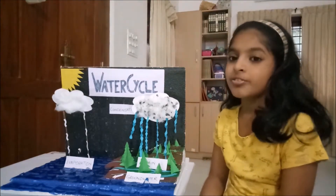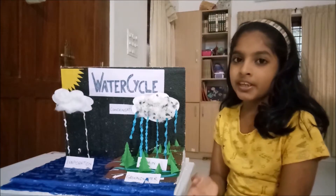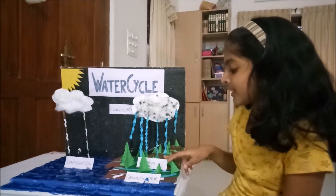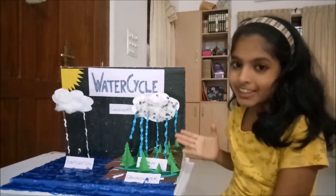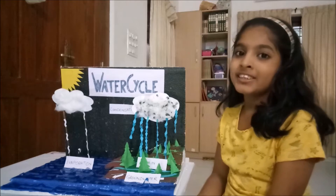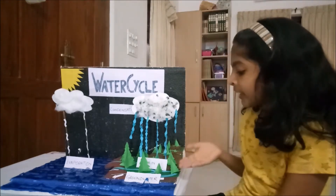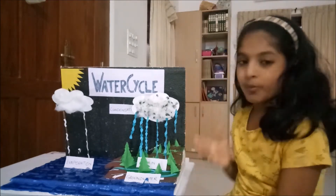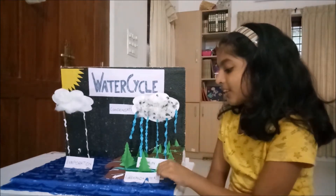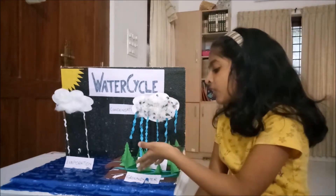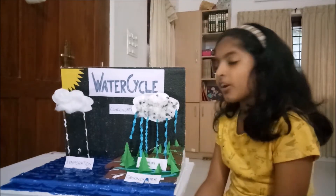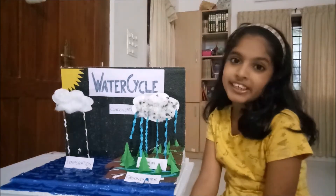So next is Condensation. This is the change of water vapor into tiny water droplets. Next is Rain. So these tiny little droplets fall down as rain and it falls onto the mountain and the land. Next is Groundwater. Water in the ground and rivers go back to the oceans or seas.